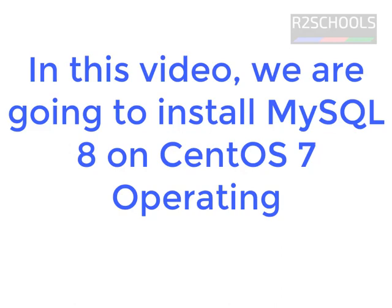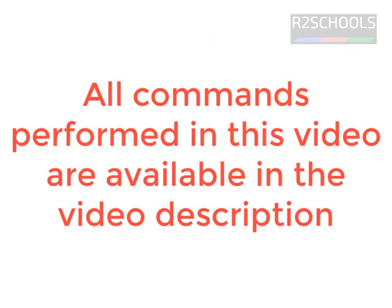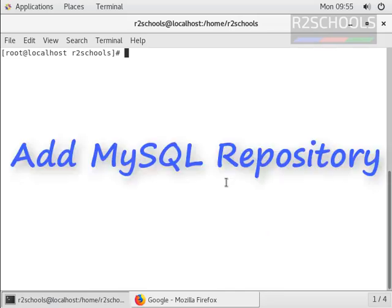Hi guys, in this video we are going to see how to install MySQL 8 version on CentOS operating system. We have divided the MySQL installation process into five steps. In step one we are going to add the MySQL repository. In step two we are going to install MySQL. In step three we are going to start the MySQL server. In step four we will check the status of the MySQL server on Linux. In step five we are going to connect to MySQL. Whatever commands I am going to perform in this video will be updated in the video description. I have connected to my CentOS Linux operating system.